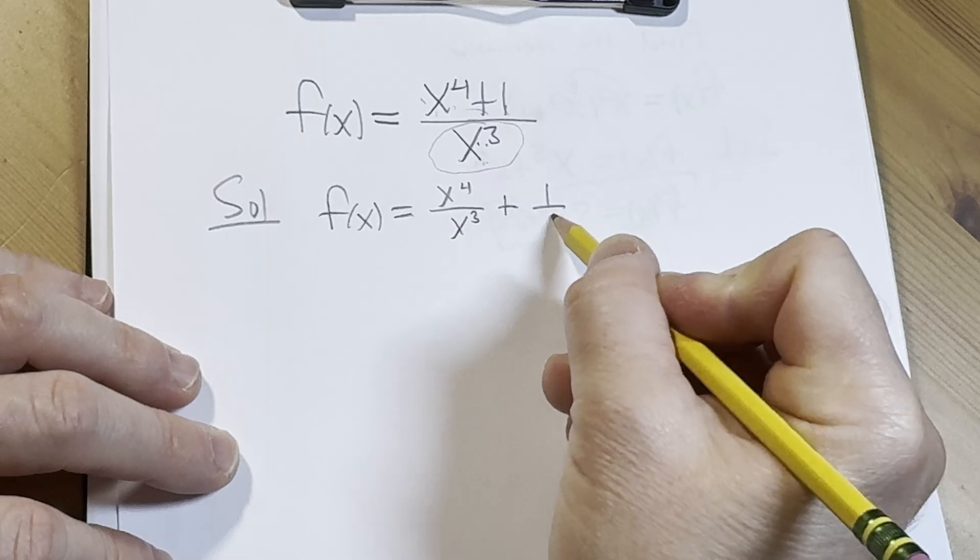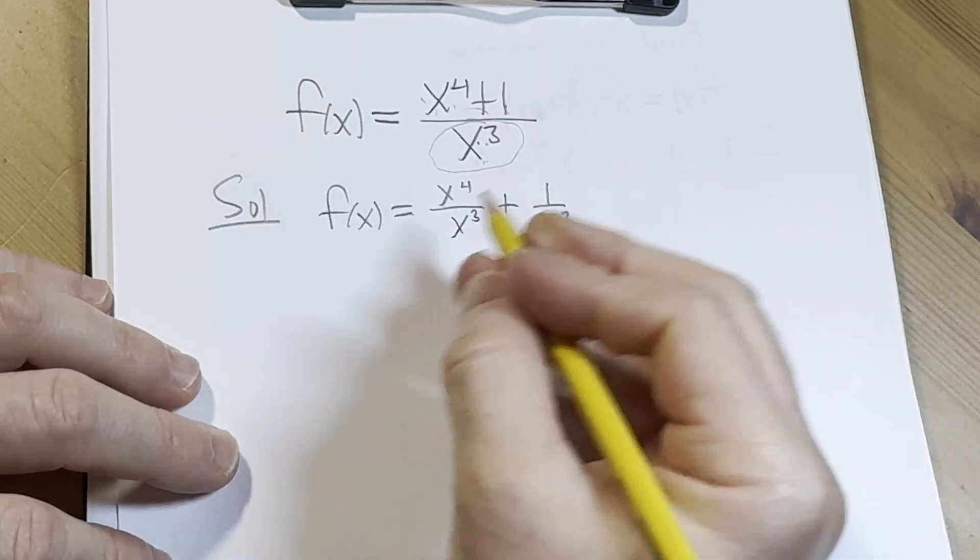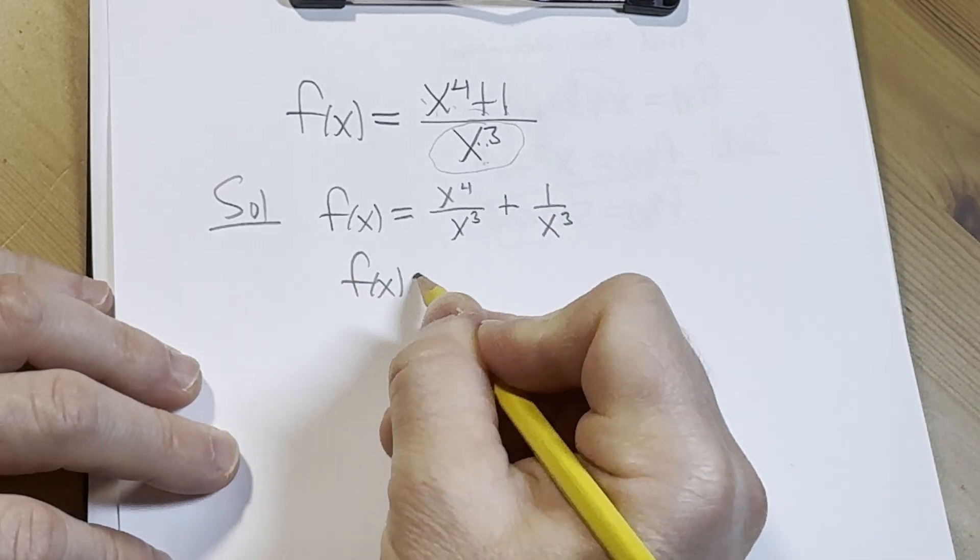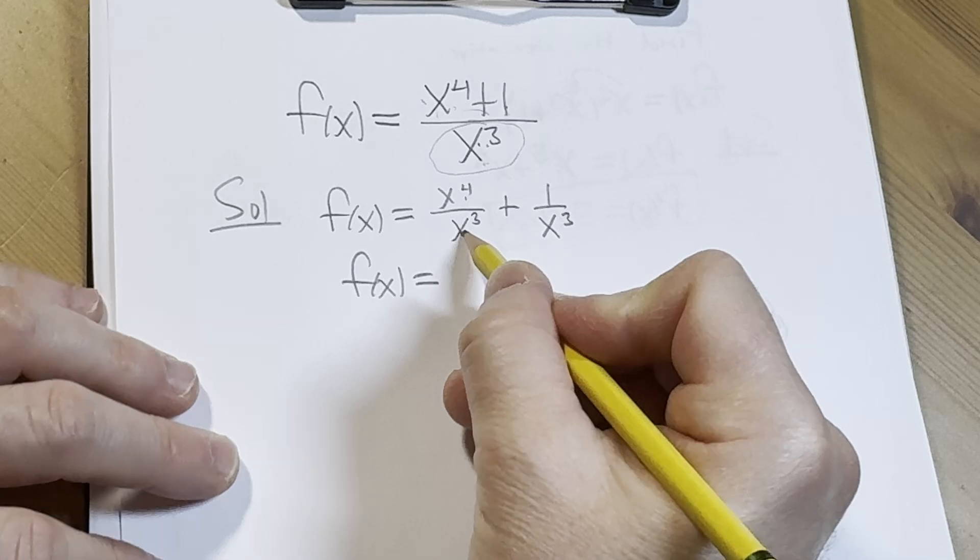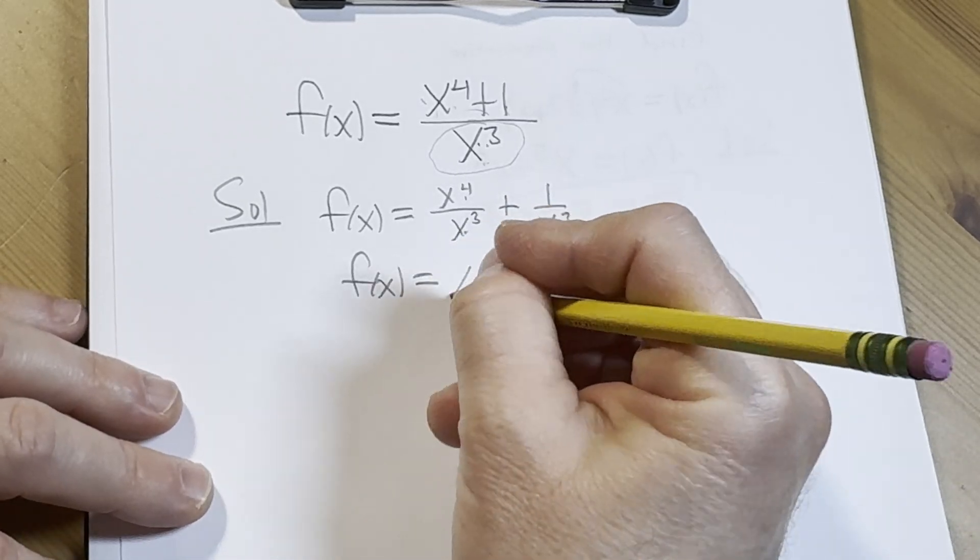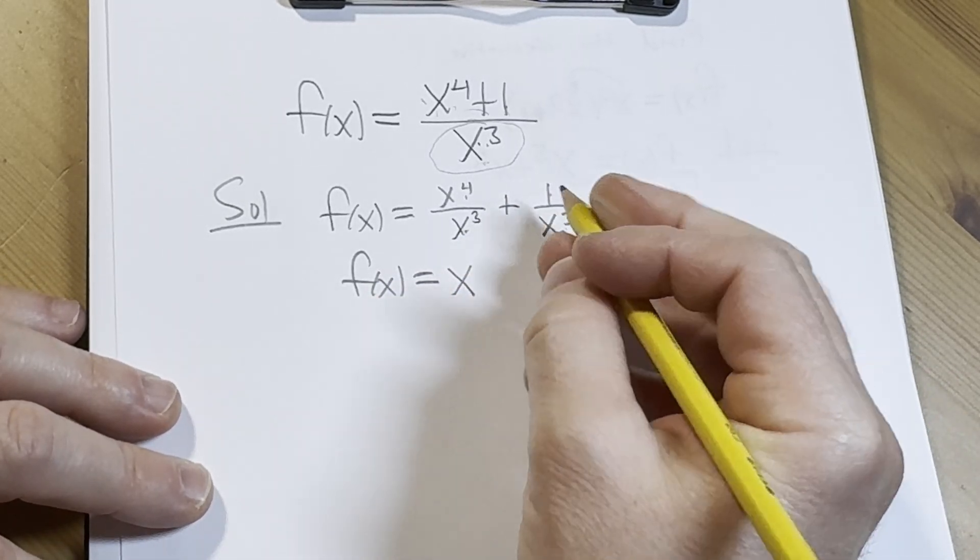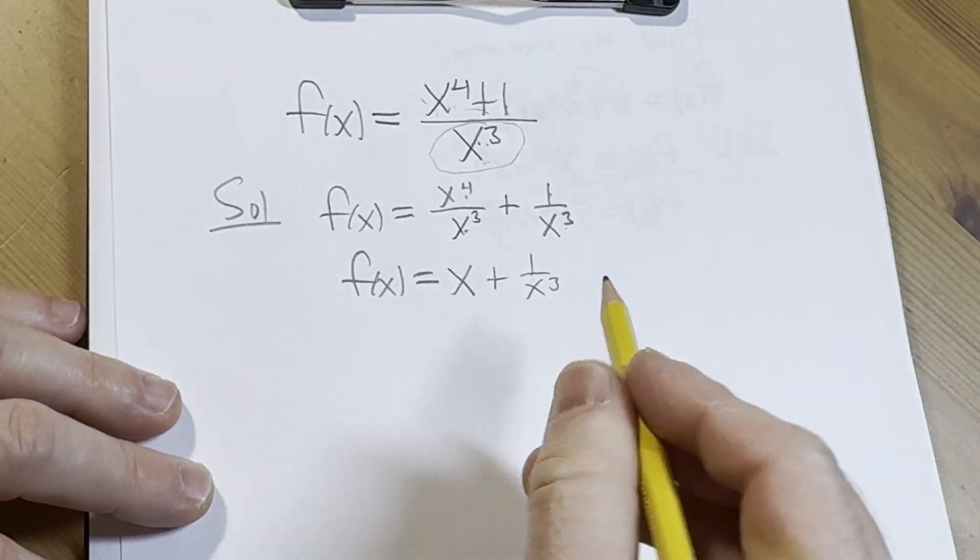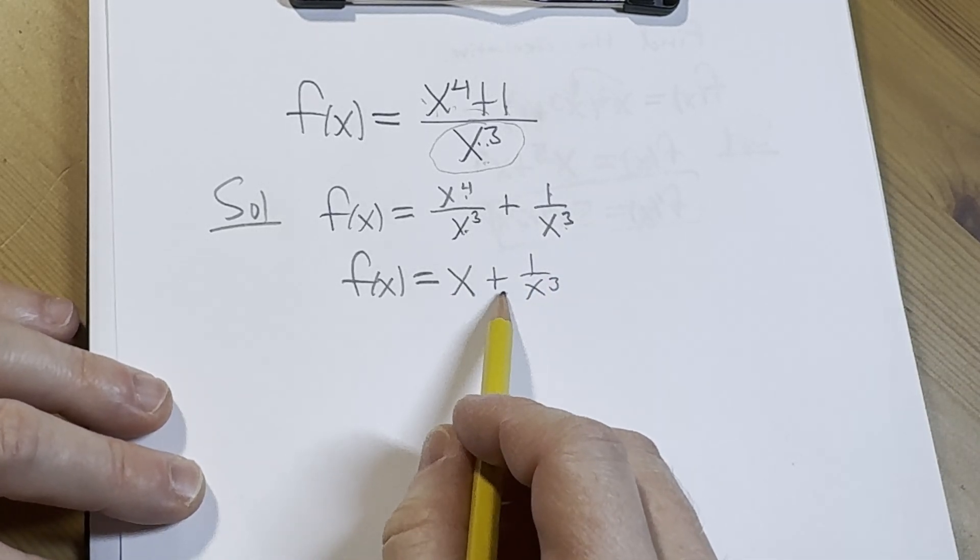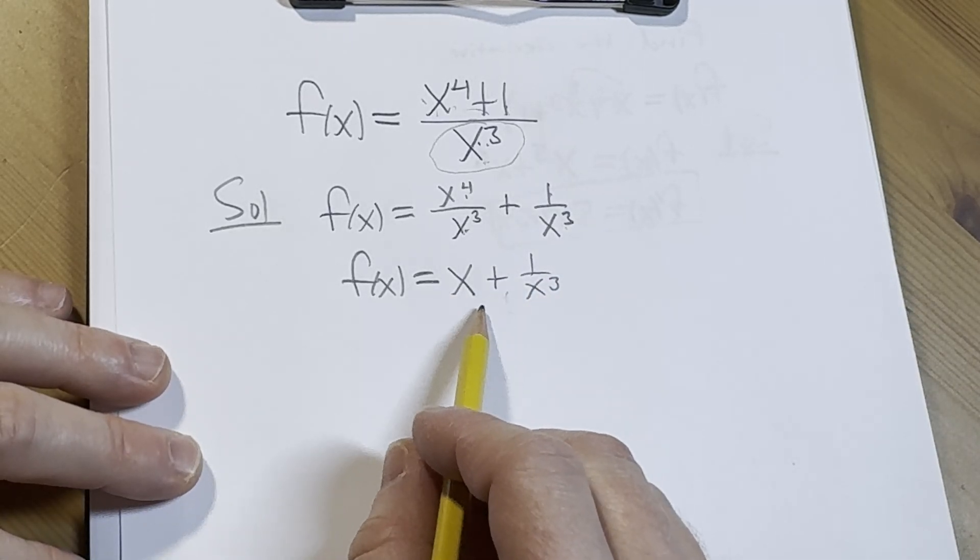So then f(x) is equal to, well, x to the fourth over x cubed is just going to be x, and then one over x cubed, let's just leave it like that. We'd like to have everything written as something to a power so we can invoke the power rule from calculus.